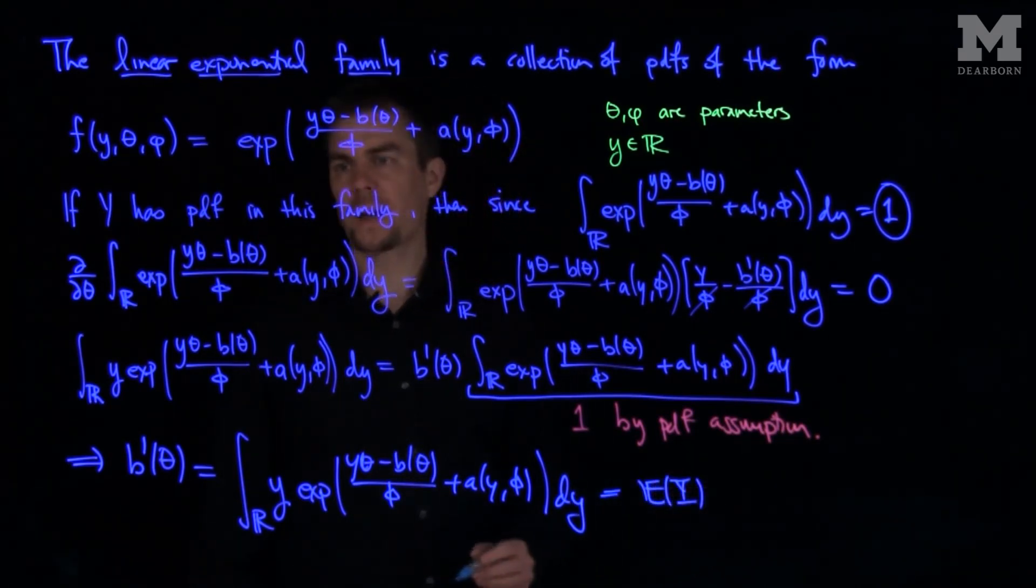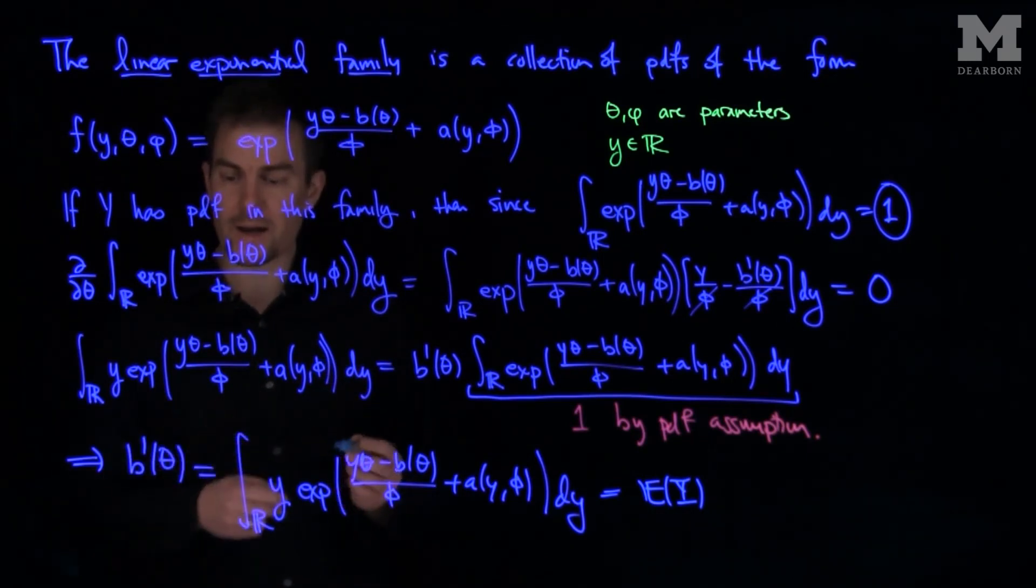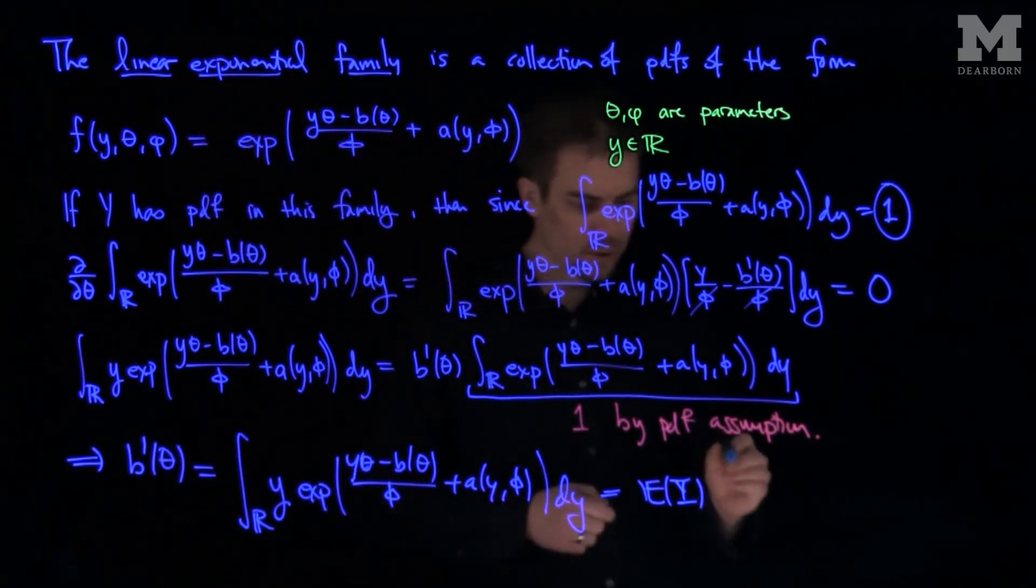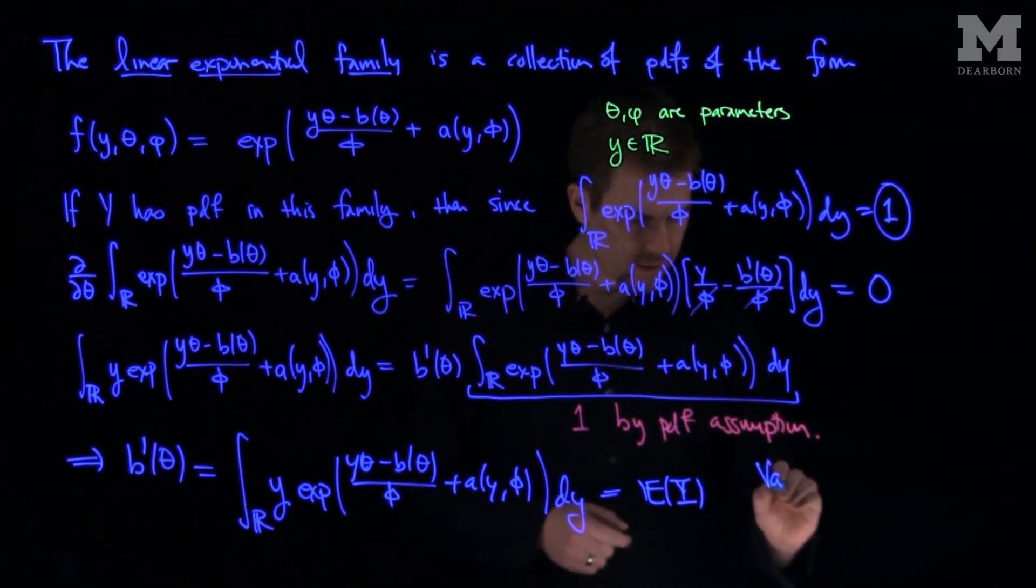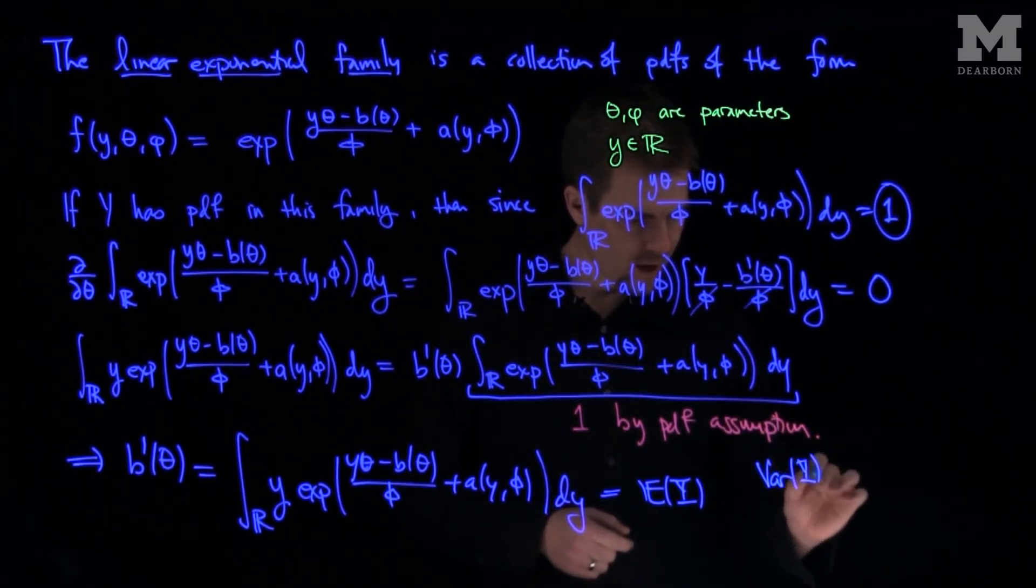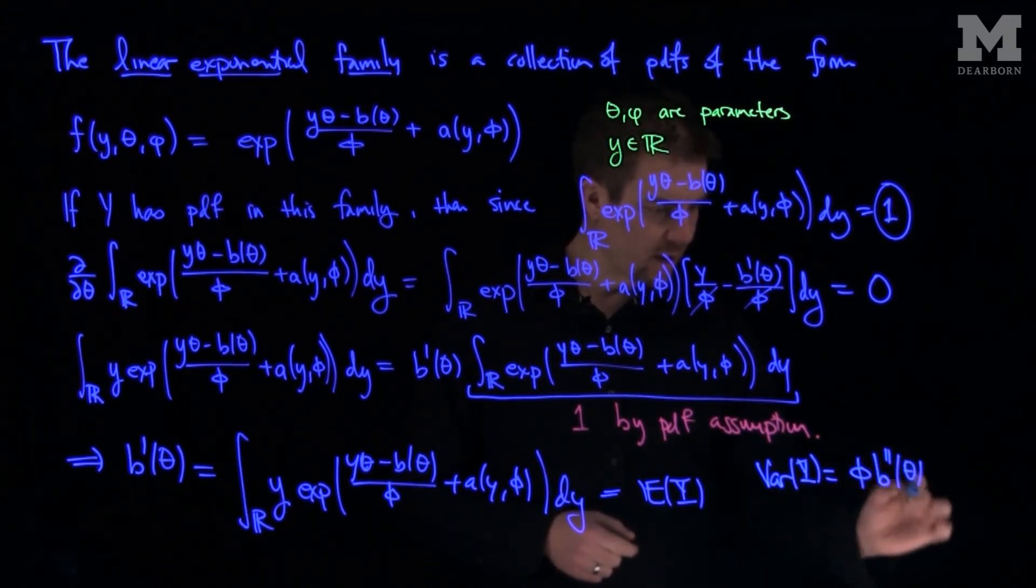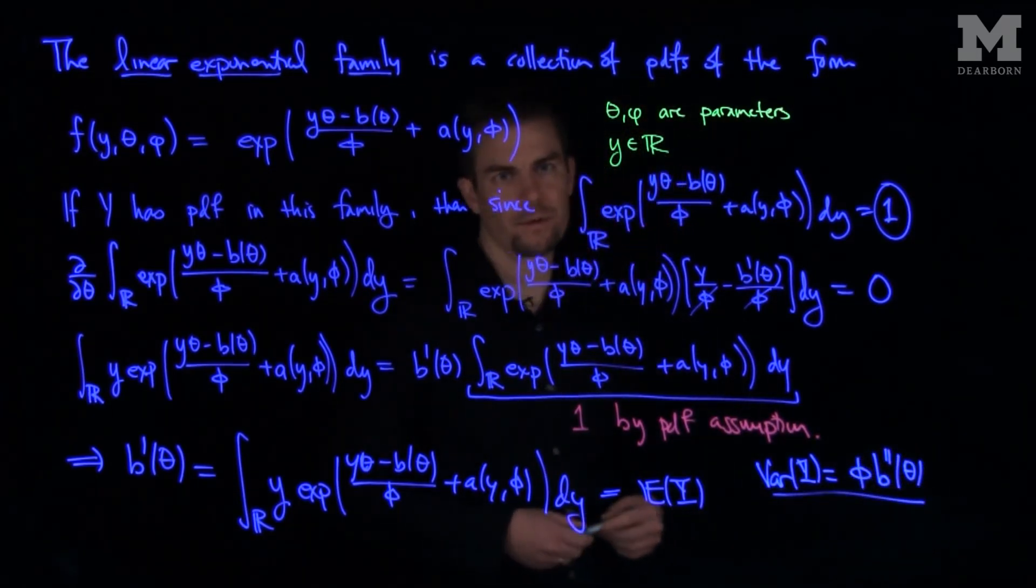If Y has a distribution in this family, the expected value of Y is b'(θ). You can also show that the variance of Y is φ times b''(θ), and we'll see this variance formula in a future video.